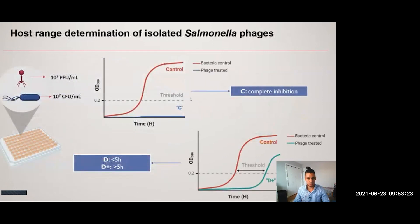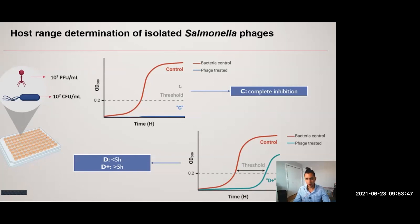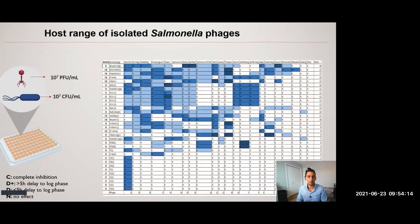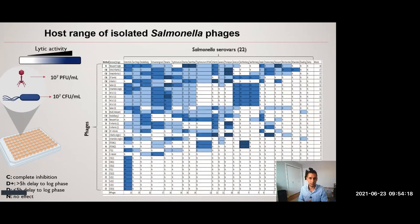We developed a high-throughput assay to determine the host range of our phages, where we can study 22 different Salmonella serovars against four different phages in a single experiment, monitoring growth over 24 hours at 25°C when infected with a low concentration of phage. We designate different letters depending on the inhibition: 'C' for complete inhibition throughout the whole experiment — the bacteria never reaching the detection threshold — or 'D+' or 'D' if there was only a delay in reaching that threshold. Here is a summary table with all the phages we isolated, with Salmonella serovars on the columns and phages on the rows.